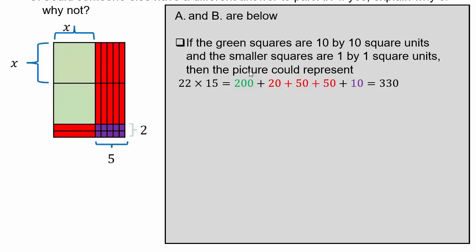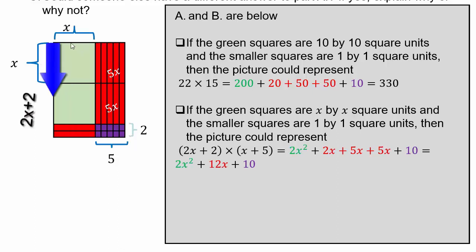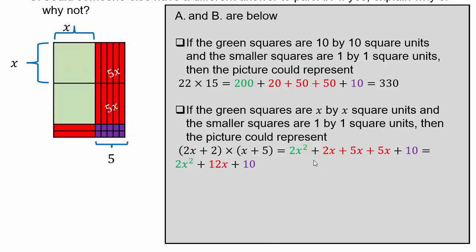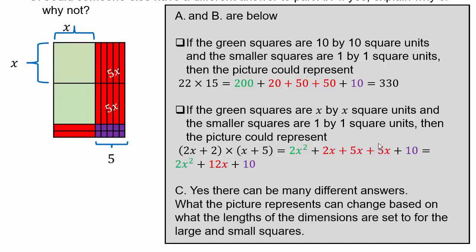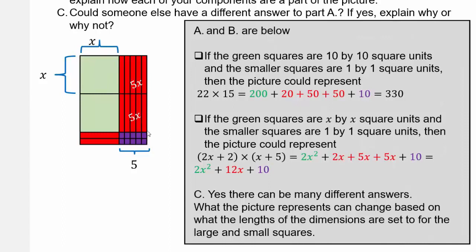Instead of 10 by 10, let's say the green boxes are x by x because we don't know. Let's say this is still 2 by 5. So then we will have 2 x-squares and 5 x's and 5 x's. Our shaded area will represent 2x squared — that's 1, 2 — so 2 times x plus 2, times x plus 5. There can be many different answers depending on what you choose for labels, so there are many possible answers here.